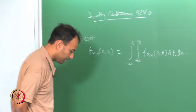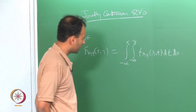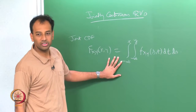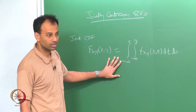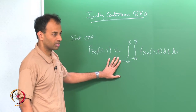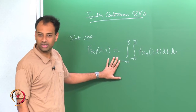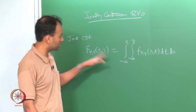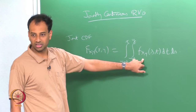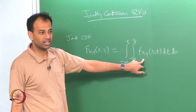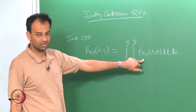There are many textbooks and authors who take this as the definition of a jointly continuous random variable. Grimmett-Stirzaker says x and y are jointly continuous if the CDF has this form for some function, which is equivalent to the definition we gave.